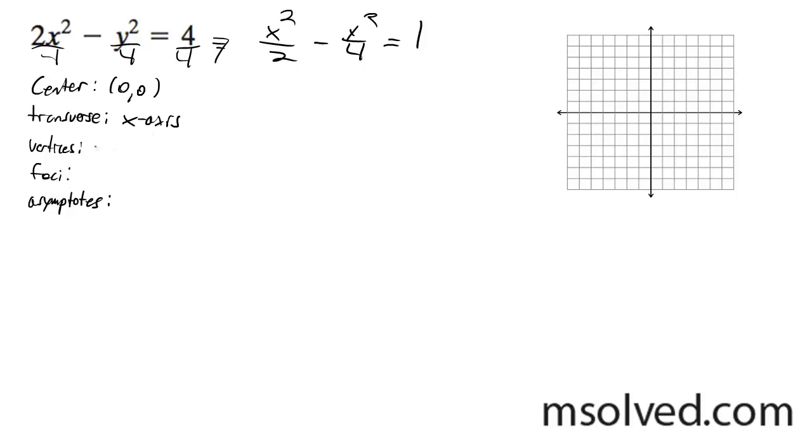The vertices are going to be negative root 2, 0, and then root 2, 0. The foci is going to be square root of 6.